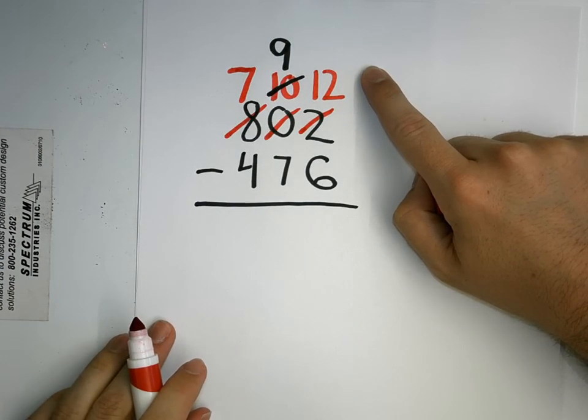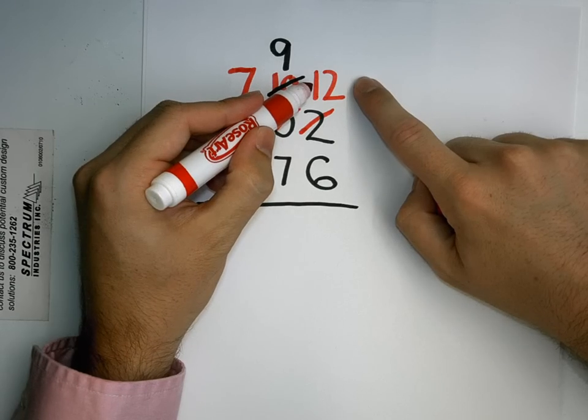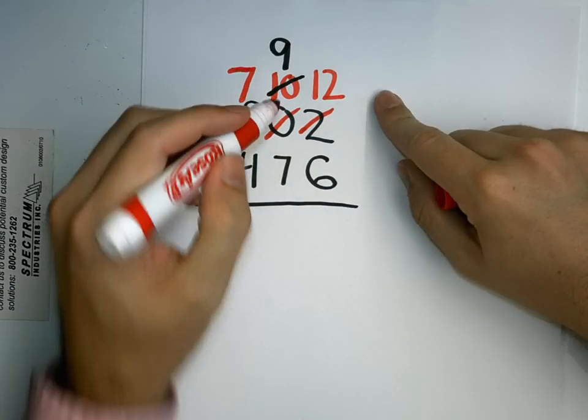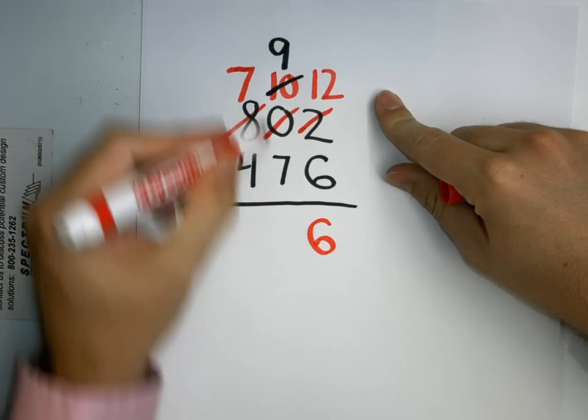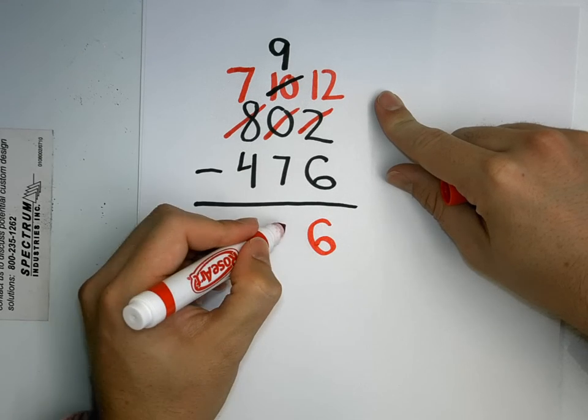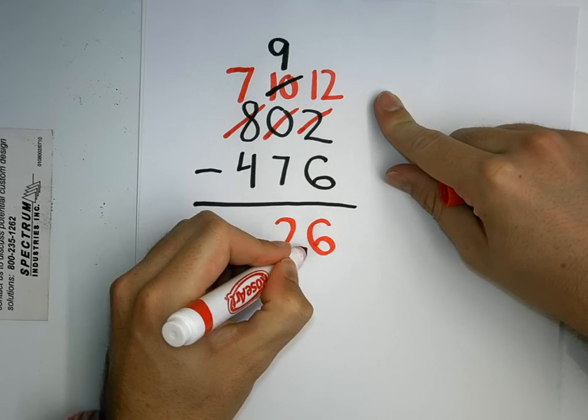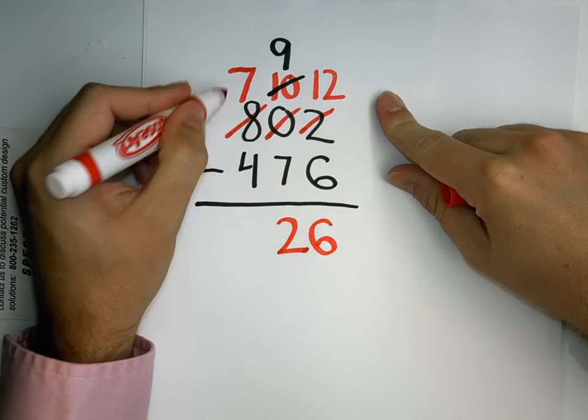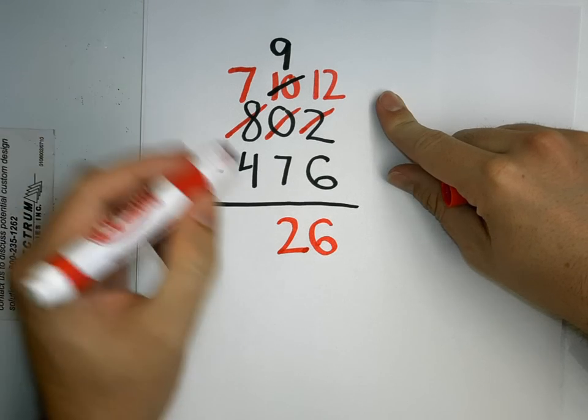Now I can subtract. 12 take away 6 is 6. 9 take away 7 is just 2. And 7 take away 4 is 3.